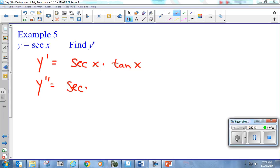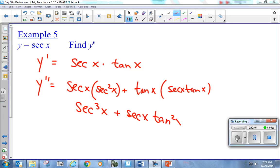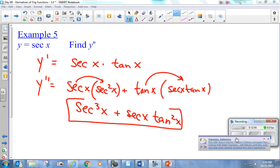So, it's first times the derivative of the second. What's the derivative of the tangent? Secant squared of x plus the second tangent of x times the derivative of the first. So, this is really secant cubed of x plus secant of x tangent squared. So, you see when I distribute this in, I've got tangent squared. When I distribute that in, it's secant cubed.